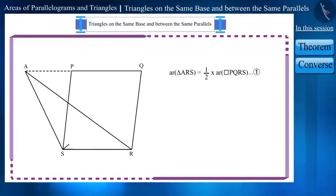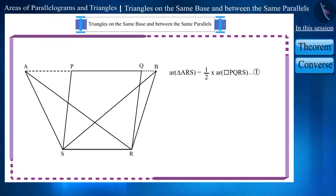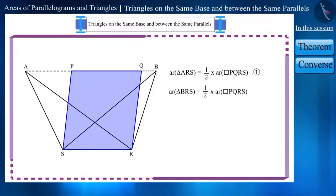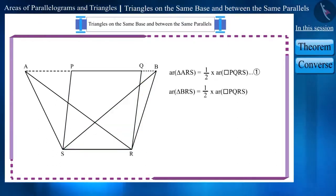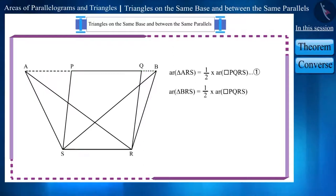If we construct another triangle here — triangle BRS — then we can say that triangle BRS and parallelogram PQRS are situated on the same base and between the same parallel lines. Let's call this equation 2.